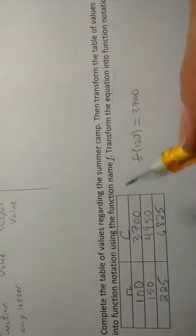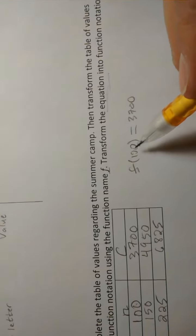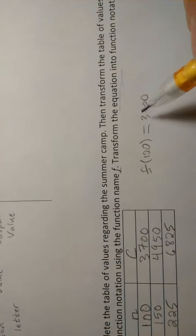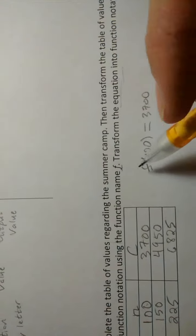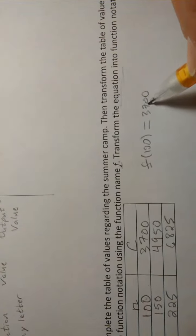So that is written in function notation. This first row, now, of information has been written in function notation. And it's saying the same thing, that 100 campers cost 3,700, just written in this new notation. Now, how is this read? What's this F here? Is this multiplying with 100? No.